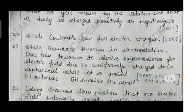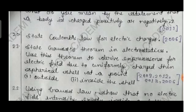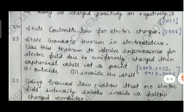Question twenty: state Coulomb's law for electric charges, asked in 2006. State Coulomb's law — the expression is F = k·q₁·q₂/r², and this is valid for point charges.